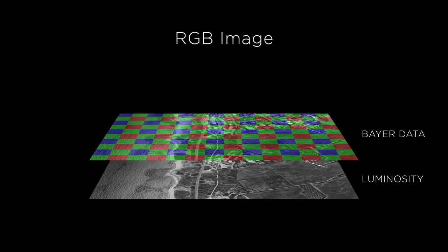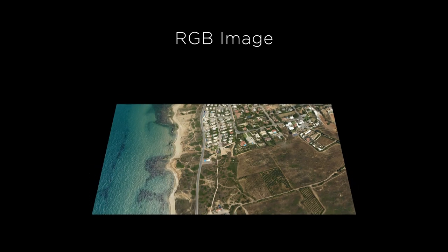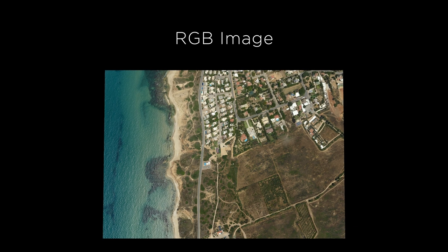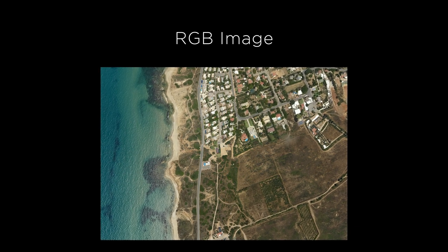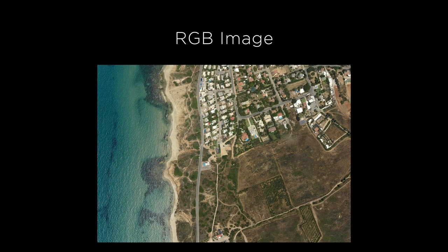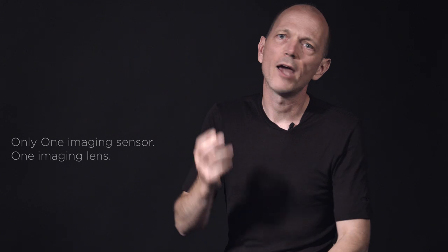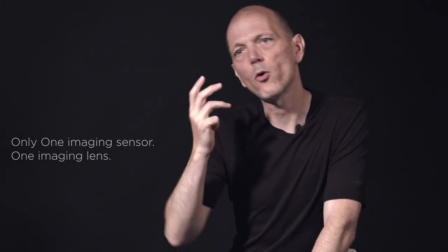Because of the strong correlation between the Bayer pixels, we can use all of the data from all of the pixels, of all three colors, to recreate an image at almost full native sensor resolution. And we can do this using only one image sensor and only one lens.